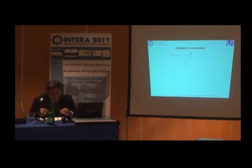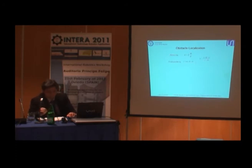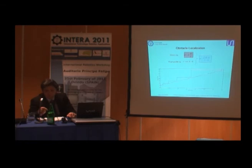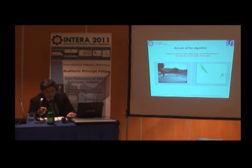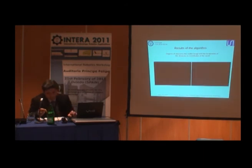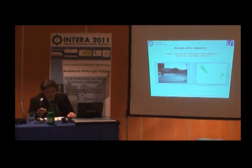The second step in the obstacle localization is to calculate the position of each non-elevated obstacle. In order to locate the obstacle, we combine two equations: the stereo equation and the road profile. The resulting equation relates the depth with the V-coordinate in the image. It is important to note that the resolution of the obstacle localization improves in comparison with using only the stereo equation. This is an example of a test in an urban environment, showing the region of interest in the visible image and the localization of the obstacles in world coordinates.